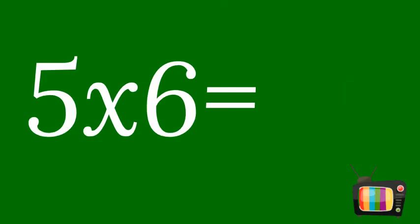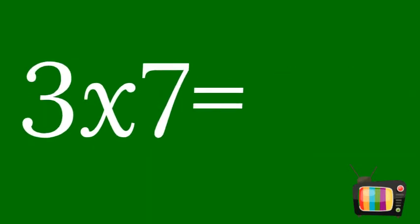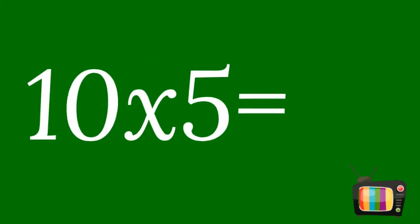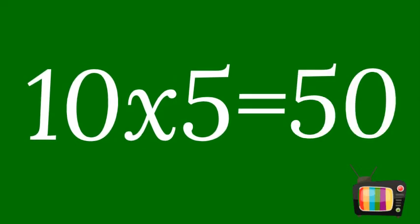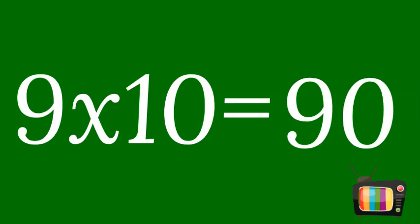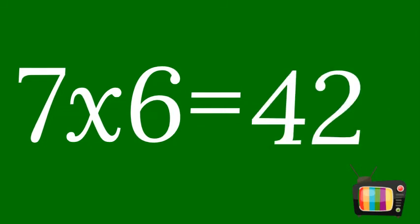5 times 6 equals 30. 3 times 7 equals 21. 10 times 5 equals 50. 9 times 10 equals 90. 7 times 6 equals 42.